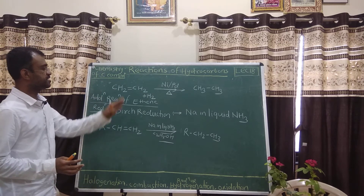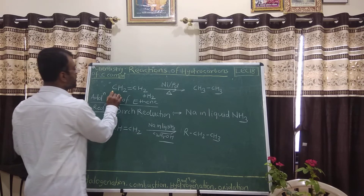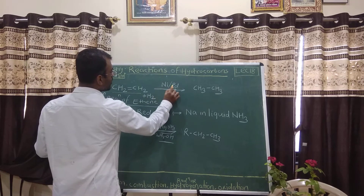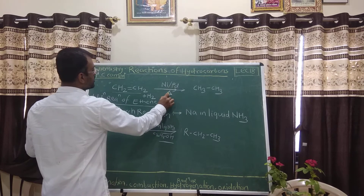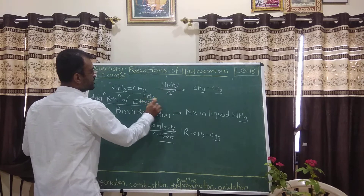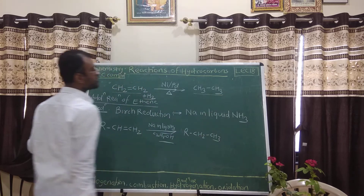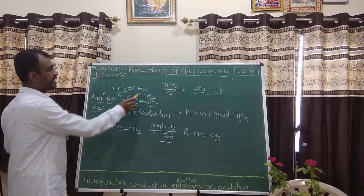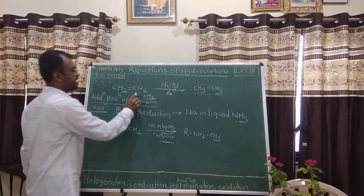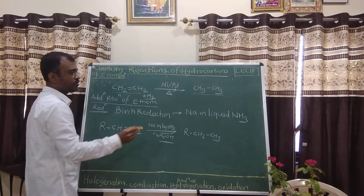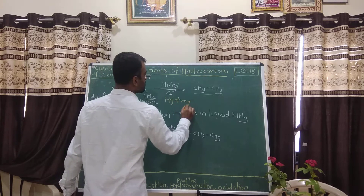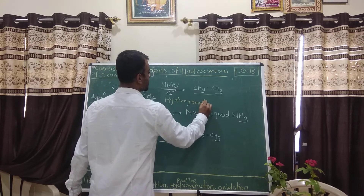We will begin with the reduction reaction of ethene. When ethene is heated in presence of nickel or palladium catalyst in presence of hydrogen, it gives the corresponding alkane. Here we are adding hydrogen to unsaturated hydrocarbons. This reaction is also called the hydrogenation reaction.